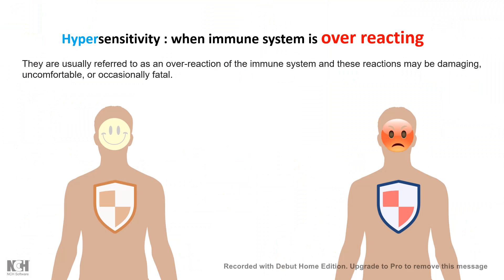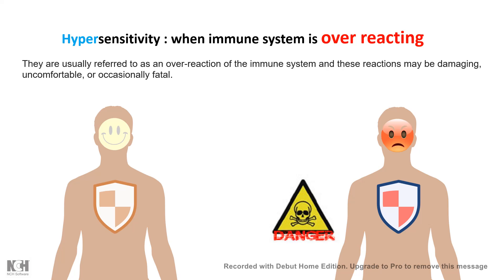Hypersensitivity is an oversensitive state of the immune system. If you personify our immune system, you might think that during hypersensitivity our immune system overreacts to exposure to any pathogen, or sometimes to self-antigens as well, increasing the risk of autoimmune disorders. It is sometimes extremely uncomfortable and occasionally fatal — a dangerous aspect of the immune system.